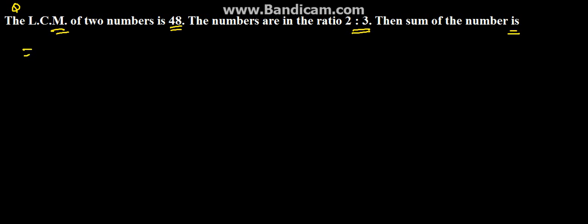We have been given the LCM and the ratio. So whenever the ratio is given, let us consider the numbers. Let the numbers be 2x and 3x, where we have considered x as the common multiple.